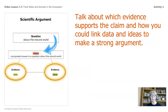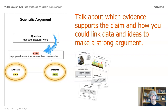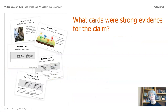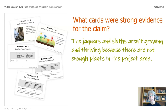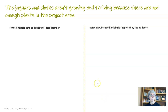Focus on what's being said, not who's saying it. Talk about which evidence supports the claim and how you could link data and ideas to make a strong argument. Go ahead and pause the video and look through the cards. What cards were strong evidence for the claim? Did you find it difficult to decide? The jaguars and sloths aren't growing and thriving because there are not enough plants in the project area. How do we connect the related data and scientific ideas together, and do we agree on whether the claim is supported by the evidence on the cards?